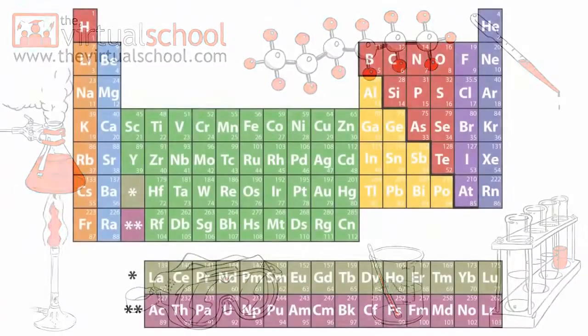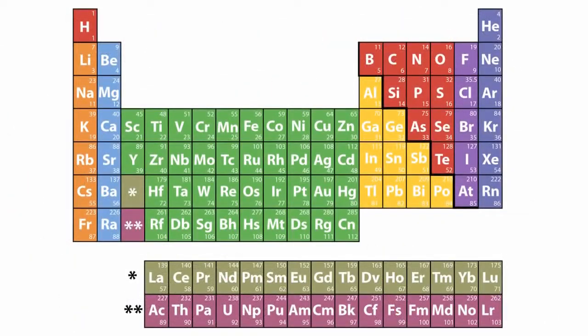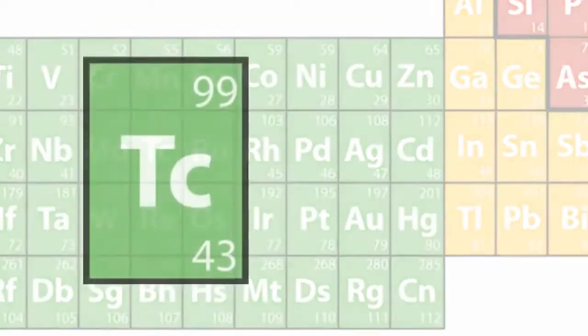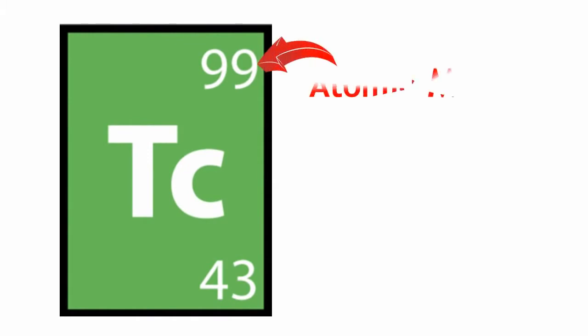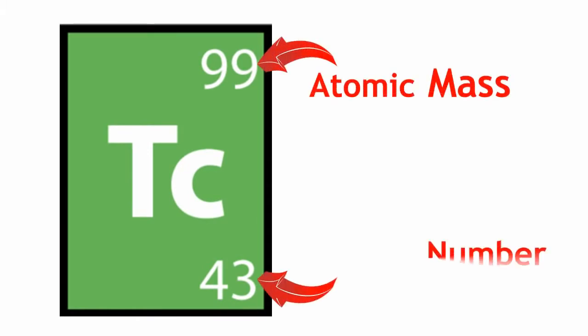The modern periodic table is based on Mendeleev's arrangement, but instead of being arranged by atomic mass, as Mendeleev's was, it is arranged by elements' atomic number.